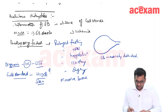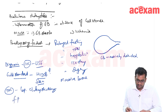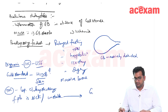The treatment of choice for cholecystitis is laparoscopic cholecystectomy. If the patient is sick or unstable, go for percutaneous cholecystostomy.